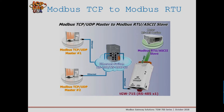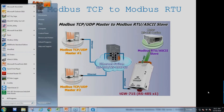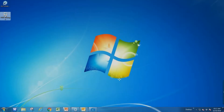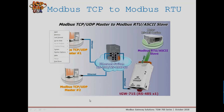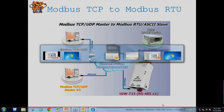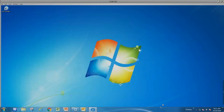The first application is a Modbus TCP to Modbus RTU gateway, where a Modbus TCP master is connected by Ethernet to a TGW module, which in turn connects to Modbus RTU slave devices. A video demonstrates the actual configuration process.